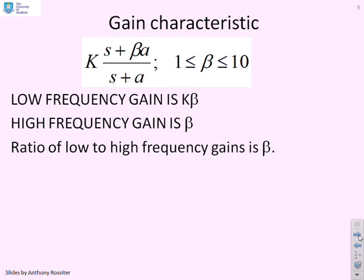So let's summarise these properties in detail. The gain is by inspection. Low frequency gain is k beta. High frequency gain is k. And therefore, the ratio of low to high frequency gains is beta.